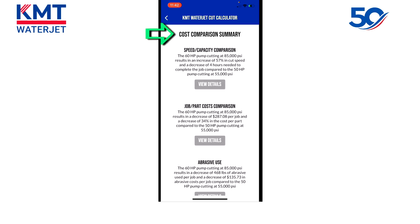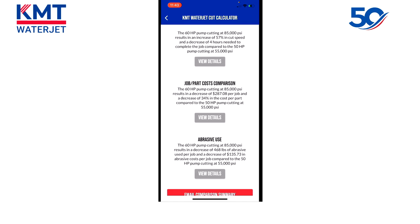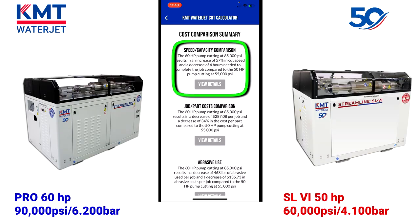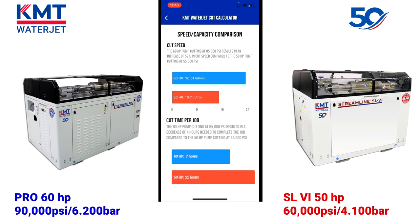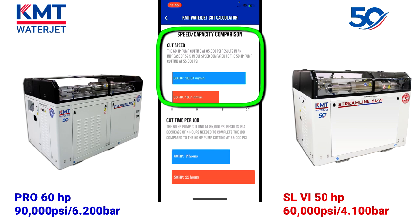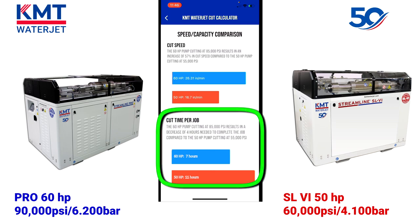Cooling water is separated from cutting water in the event that you are selling a chiller on the system — you can make cooling water zero dollars. Finally, I will enter the electrical rate. Once all the parameters have been filled in, I will hit Calculate Job Cost. This page brings up a cost comparison summary with three different comparisons: the speed/capacity comparison, the job part cost comparison, and the abrasive use comparison. Selecting the speed/capacity comparison, we can see a written explanation and a graphical comparison. The cut speed shows a 57 percent increase in cut speed, displayed both in written form and with bar graphs. The 60 horsepower pump cutting at 85,000 PSI results in a decrease of nearly four hours needed to complete the same job compared to the 50 horsepower pump — amazing results.